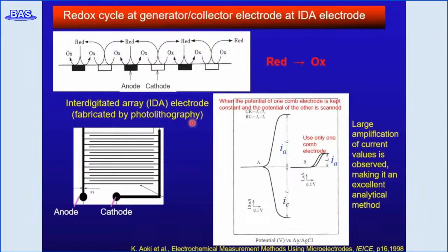When each electrode in the array operates at the same potential, the overall response of the electrode array depends on two parameters: the density of the electrode distribution, and the relative dimension of the electrode with regard to the thickness of the diffusion layer delta developing at each active element of the array. The crosstalk between two paired electrode arrays induces large amplification of current, which is a merit for analytical applications.